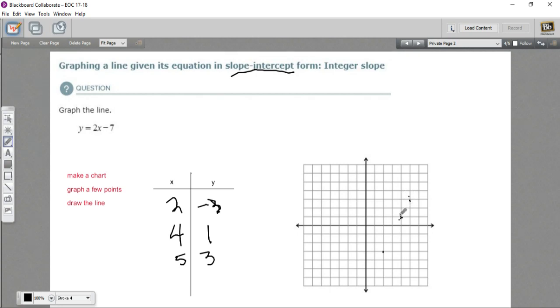And then 5 on the x is 3. So it looks like they're all lining up. We can draw the line in now. So there is our line, y equals 2x minus 7.